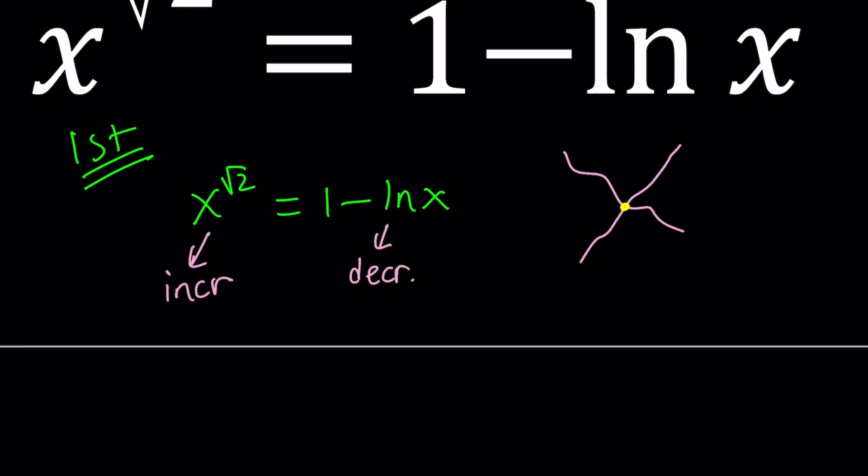But first of all, before we start solving the problem, let's go ahead and test some values. For example, can x be 0? But remember, we just said x needs to be greater than 0. So, that kind of restricts the domain. Obviously, if the domain of 1 minus ln x is positive values, the same thing is going to be true for x to the power root 2, because they can only intersect where they're defined. So, x must be positive. Under those conditions, you can kind of test out some values. Especially, if you have ln x, you should always set it equal to 0. So, ln 1 is 0.